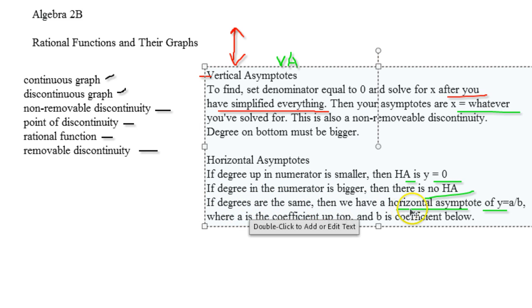All right, so if the degrees are the same, then we have what is called the horizontal asymptote of y equals a divided by b, where a is the coefficient up top and b is the coefficient below. So let's take a look at some examples here.